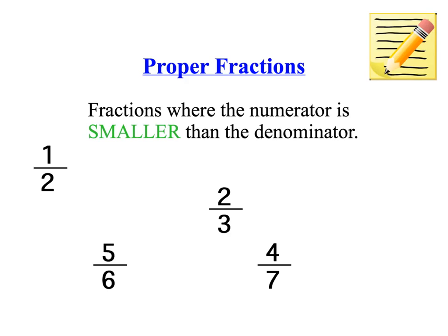Now, proper fractions — I want you to write this definition down. They are fractions where the numerator is smaller than the denominator, so it's only part of the whole number. When we're looking at 2 thirds, for example, it's only 2 parts out of the 3. If we represent that as a picture, we're breaking it into 3 — that's 1 whole being 3 parts out of 3. But if we're representing 2 thirds, we shade 1 and 2. So now I've shaded 2 thirds of the whole. That's a proper fraction because the numerator is smaller than the denominator.